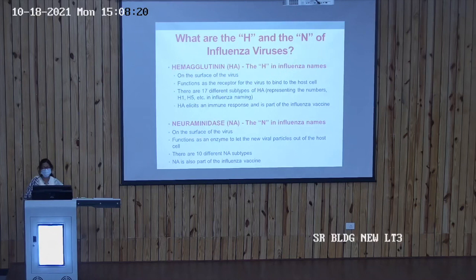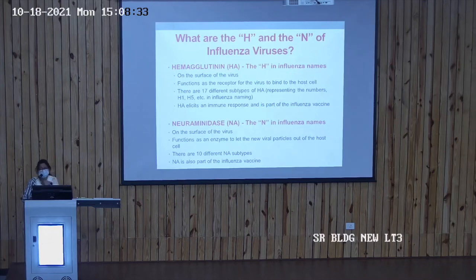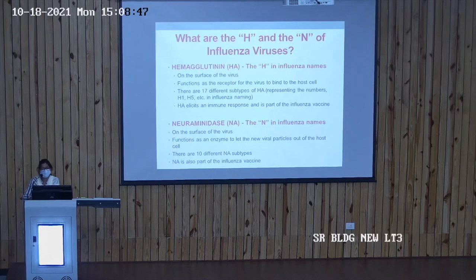H stands for hemagglutinin (HA). It is present on the surface of the virus and functions as a receptor for binding of the virus to the host cell. There are 17 different subtypes of hemagglutinin, represented by numbers such as H1, H5, etc. Hemagglutinin elicits an immune response and is part of the influenza vaccine.